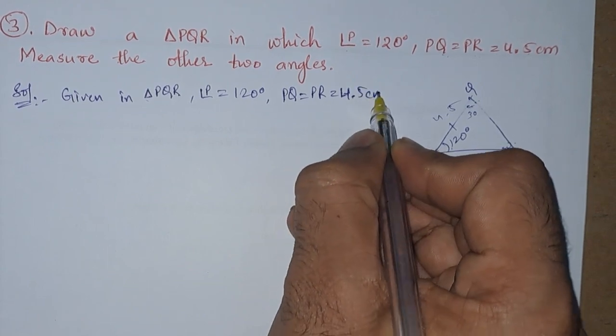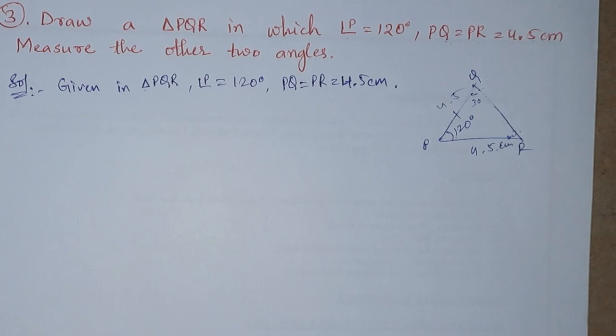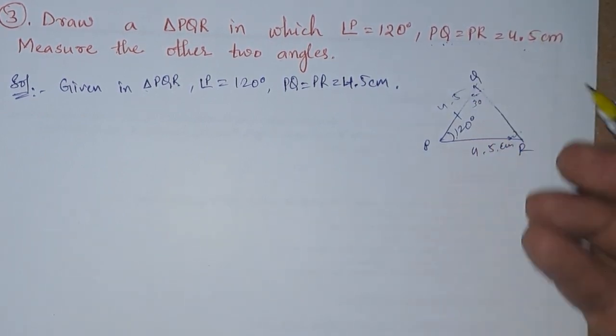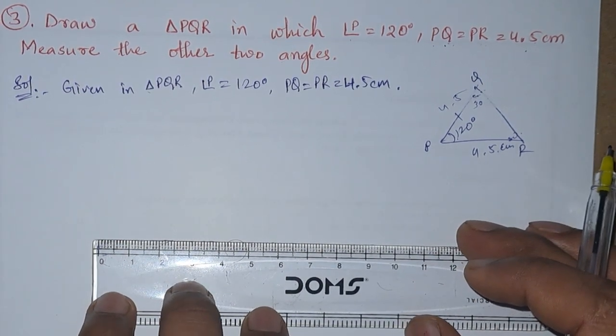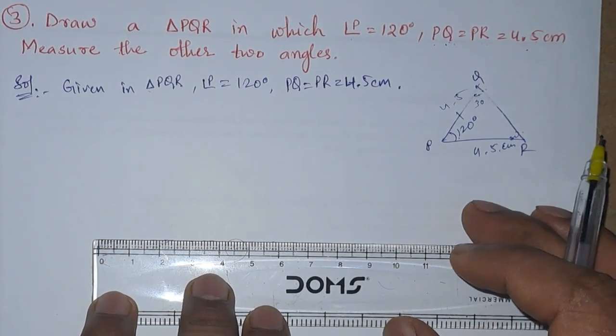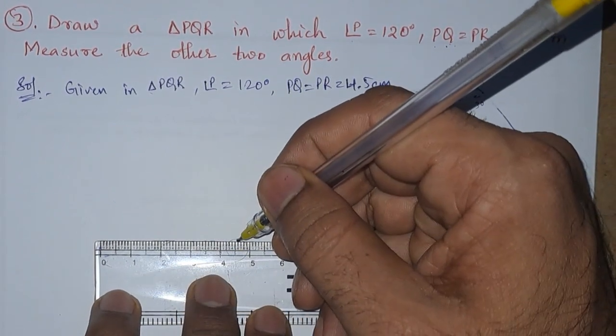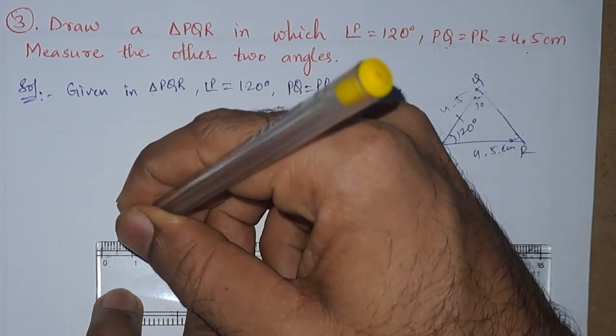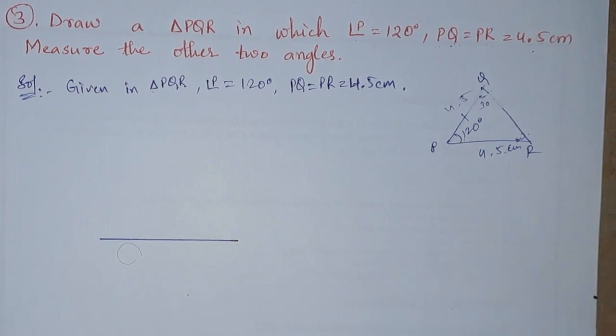So first we will take PQ as base, 4.5 centimeters. Let us take a ruler. I am using pen just to make it visible, but you have to use pencil. 4.5 centimeters, so this is 4.5 centimeters.